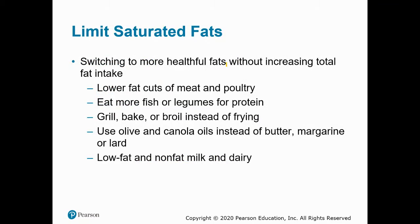How do we limit saturated fats? You could eat more fish and legumes as your protein source since these are virtually devoid of saturated fat. You can choose lower-fat cuts of meat and poultry. You could switch to grilling, baking, broiling, air frying, steaming, or boiling instead of frying. You can use oils rich in mono- and polyunsaturated fats instead of butter, margarine, or lard. And you can switch to low-fat or nonfat dairy, or plant-based milk, which has no saturated fat.